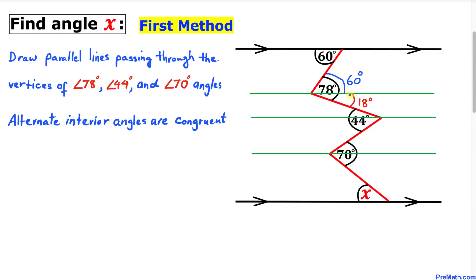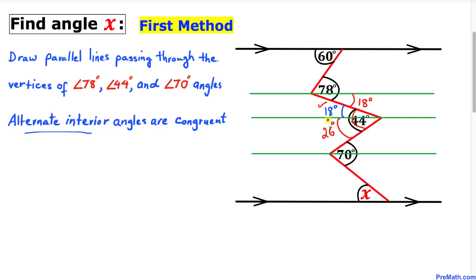Now focusing on the 18 degree angle — this angle and the next are once again alternate interior angles. If this angle is 18 degrees, this corresponding angle must also be 18 degrees. Since the whole angle is 44 degrees, this remaining angle is 44 minus 18 equals 26 degrees.